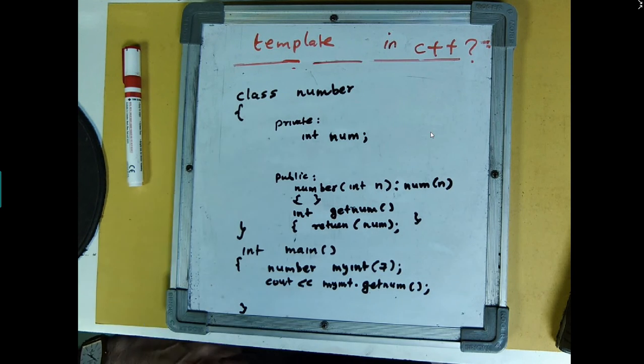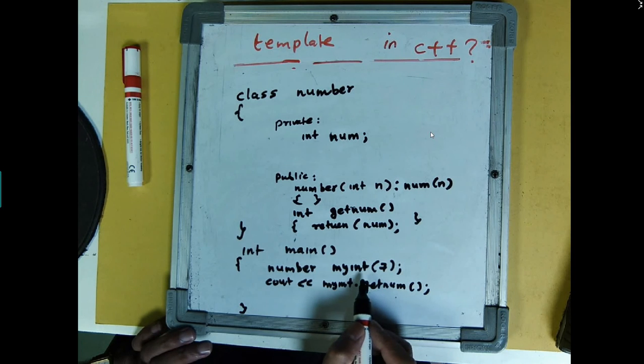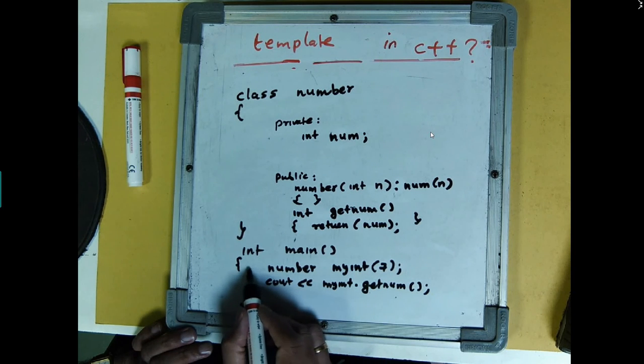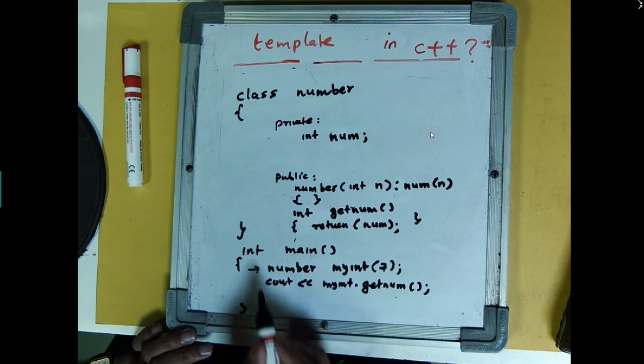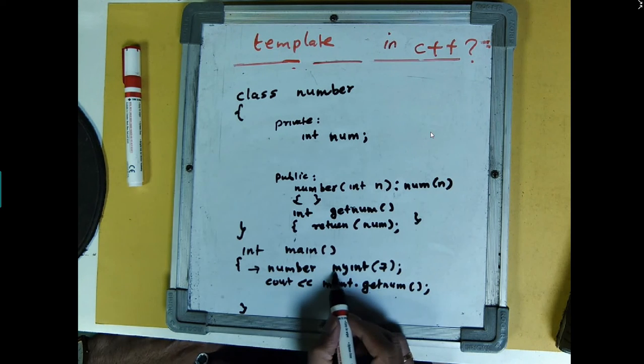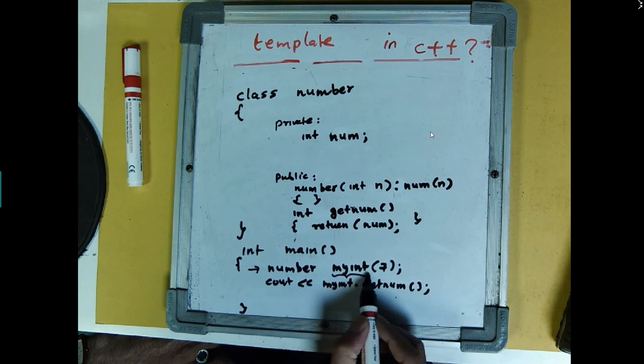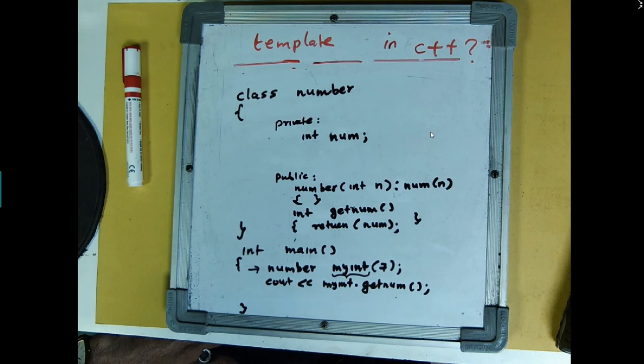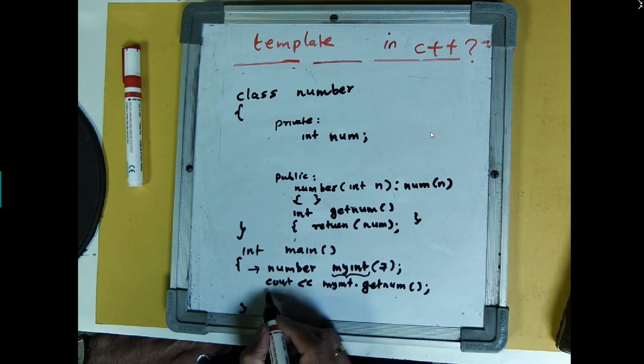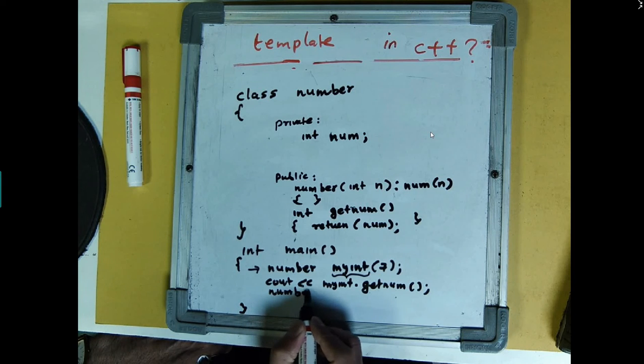So let's say you wanted to make this class a general purpose, that the type of variable you want, instead of integer, you also want it to be a float also, let's say, or double number or something.